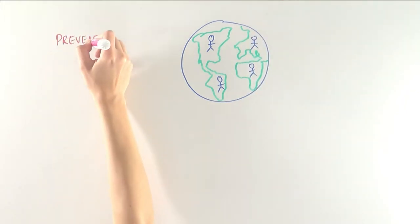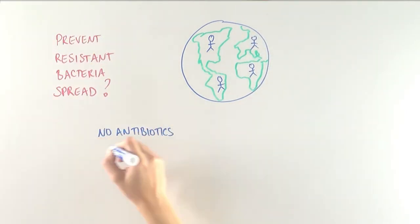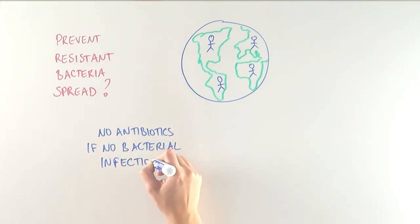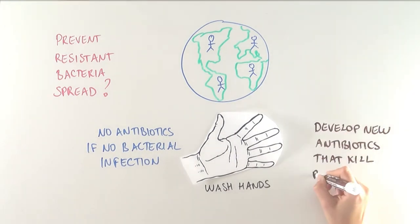So what can we do as citizens of the world to prevent the spread of antibiotic resistant bacteria? Don't use antibiotics when you don't have a bacterial infection. Wash your hands when in a medical facility. As researchers, we need to work on developing new antibiotics that specifically target resistant bacteria.